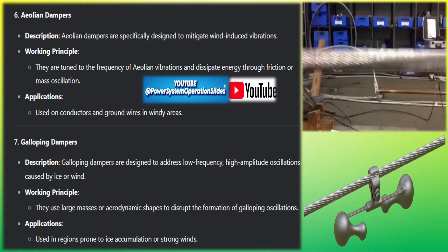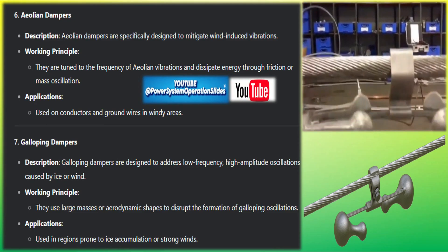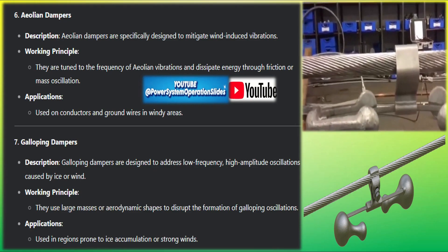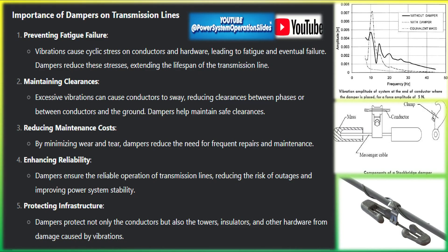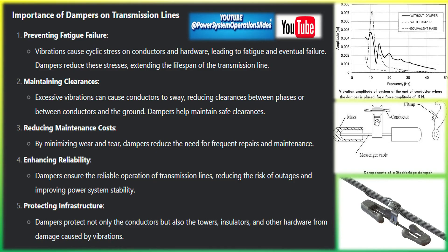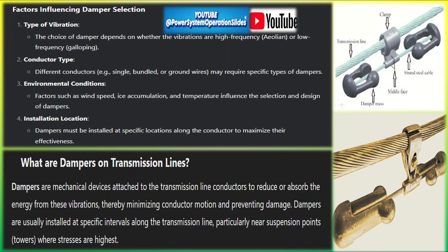Dampers are mechanical devices attached to the transmission line conductors to reduce or absorb the energy from these vibrations, thereby minimizing conductor motion and preventing damage. They are usually installed at specific intervals along the transmission line, particularly near suspension points and towers where stresses are highest. Dampers work by absorbing the mechanical energy of the vibrating conductor and dissipating it as heat or redirecting it into the mass of the damper.